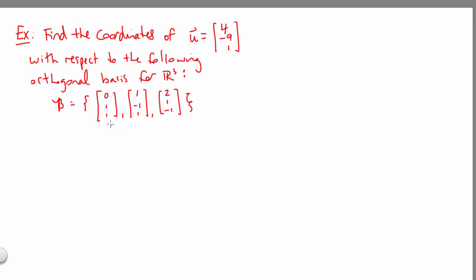First, I'd like to give names to these three basis vectors. Let's call them v1, v2, v3. Then we can say let u equal c1 v1 plus c2 v2 plus c3 v3.